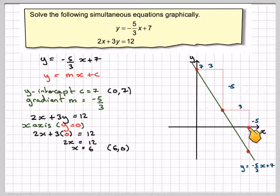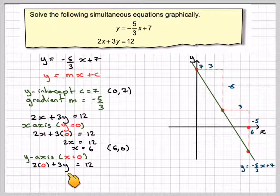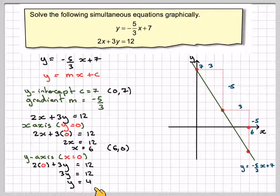Mark on the point 6, 0, which is there. For the y-axis, x is equal to 0. So, we're going to get 2 times 0 plus 3y is equal to 12. 3y is equal to 12. y is equal to 4.